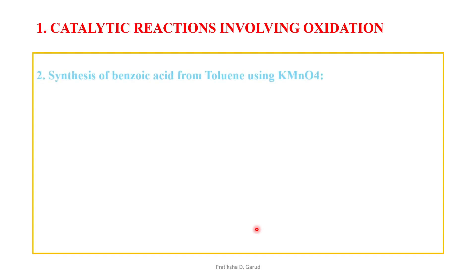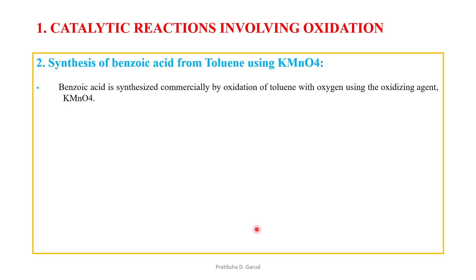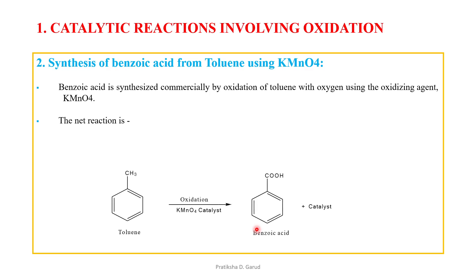The second oxidation reaction is the synthesis of benzoic acid from toluene using potassium permanganate (KMnO₄) as the oxidizing agent. Benzoic acid is synthesized commercially by oxidation of toluene using oxygen with KMnO₄ as catalyst. The reaction converts toluene into benzoic acid — a single methyl group is converted into a carboxylic group.